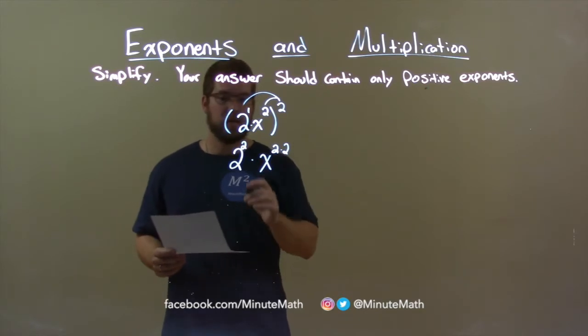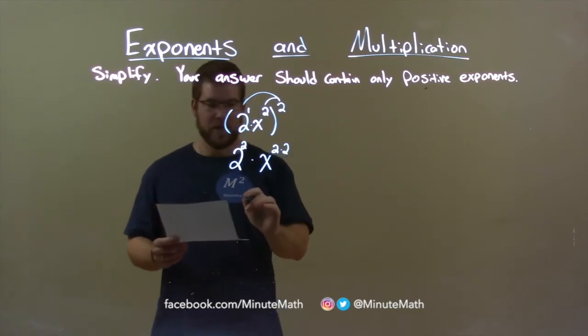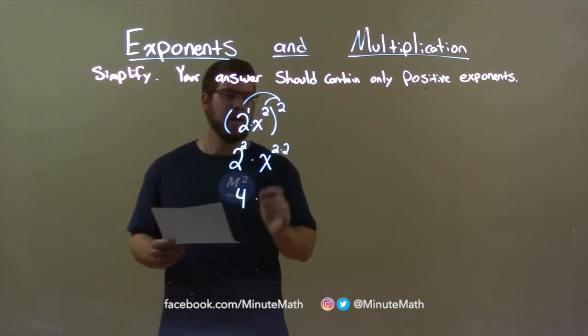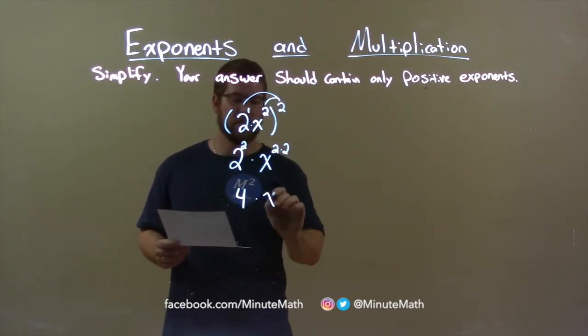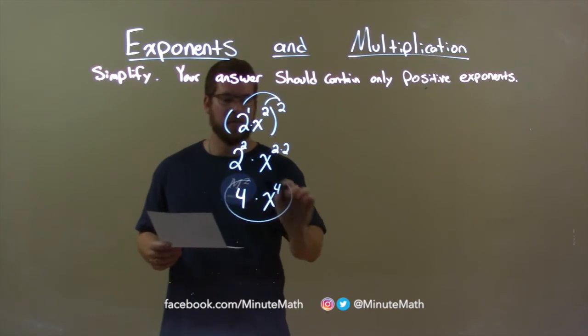Now we can simplify this. 2 squared is 4, and x to the 2 times 2 power, well, 2 times 2 is 4. That's x to the fourth power. And there we have our final answer, 4x to the fourth power.